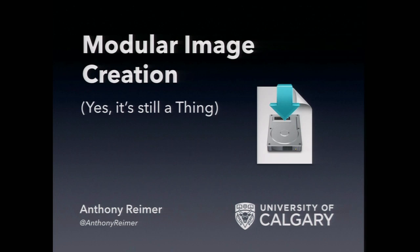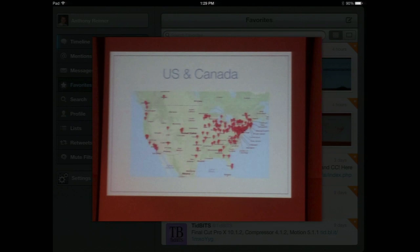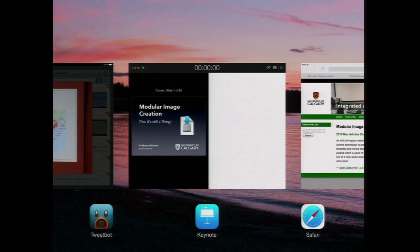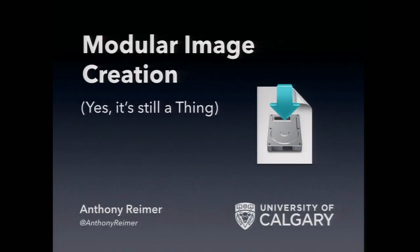My name is Anthony Reimer. I'm from the University of Calgary. Someone was nice enough on Twitter to take a picture of where everyone is from — way up on the mountain side on the top there, that's me. I come to you from the University of Calgary, and if any of you are hockey fans, you'll know approximately where that is — over by the Rocky Mountains. It's not cheap to come here, but this is such a great conference, it's worth coming whenever I can.